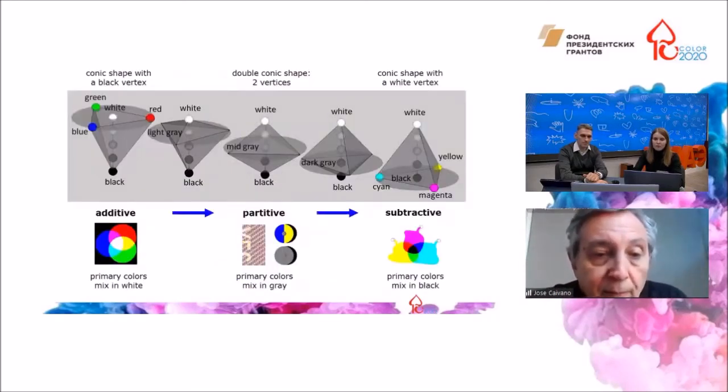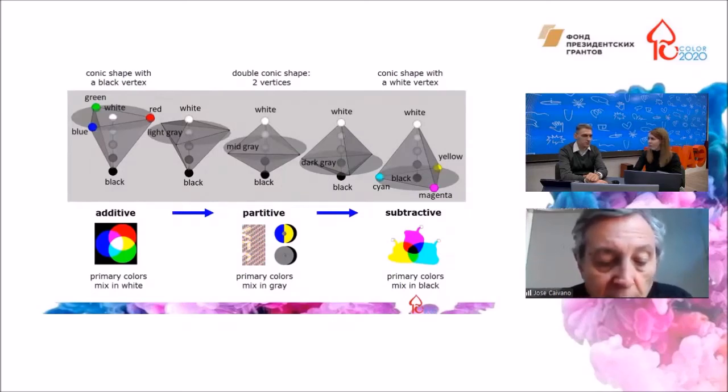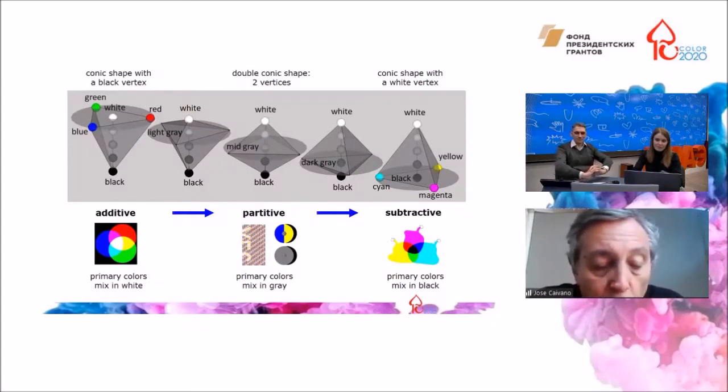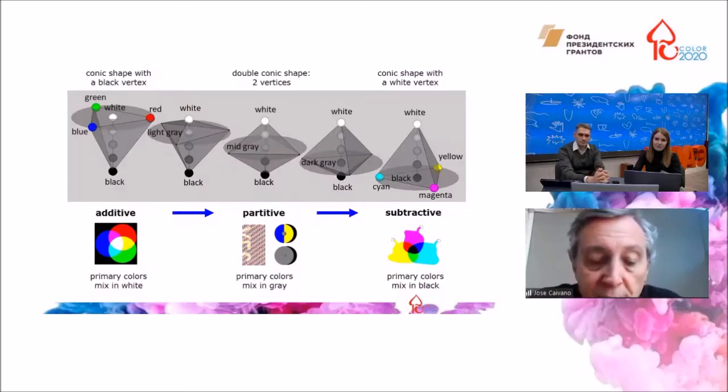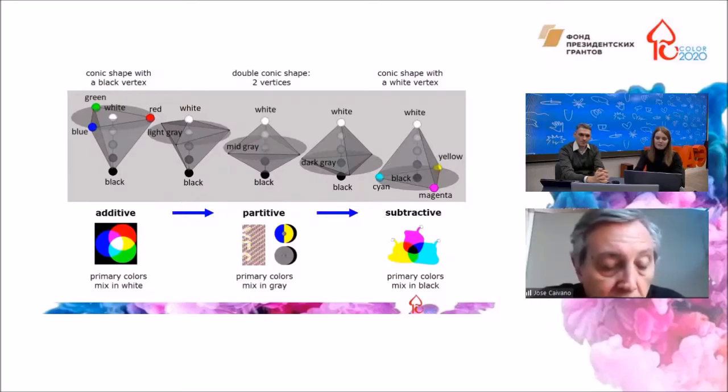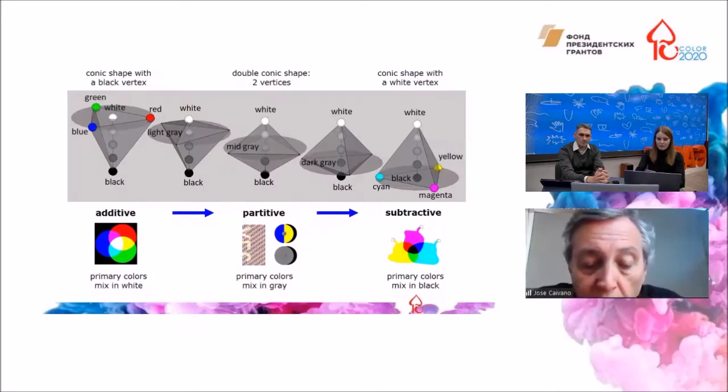And thus, a schematic three-dimensional model of gradual transformation can be proposed to encompass different color systems that represent any possible mixture between additive and subtractive. At one extreme, the mixture of three color lights, usually red, green, and blue, gives white as a result.